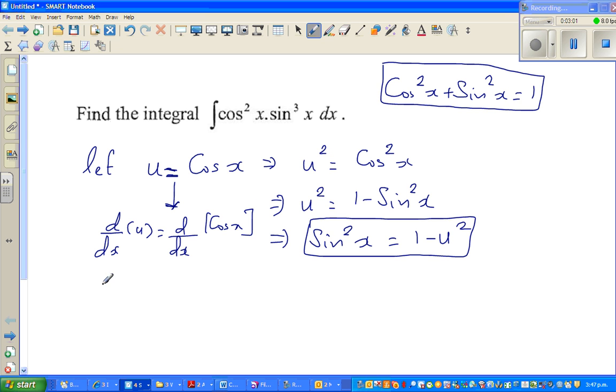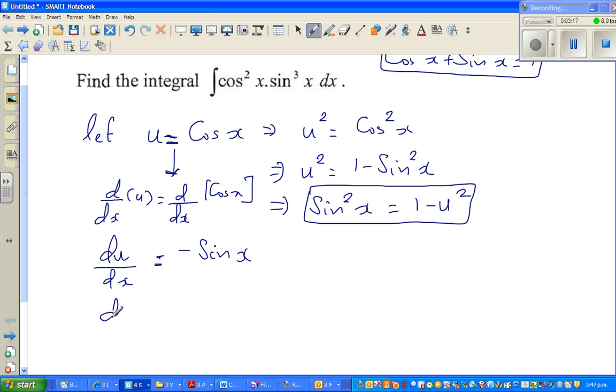So d by dx of u is nothing but du by dx. And differentiation of cos x, you can refer in your formula sheets, is minus sine x. So if you cross multiply or multiply both sides by dx, du equals minus sine x dx.